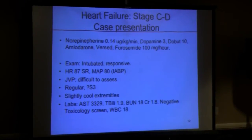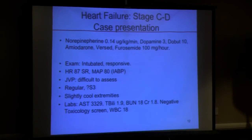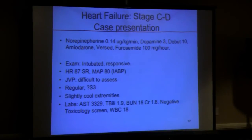On arrival, he was on levo, dopamine, dobutamine, amiodarone, Versed, and Lasix — intubated but responsive. His MAPs with balloon pump were about 80, heart rate 87. JVP was difficult to assess given ventilation; he had slightly cool extremities, and labs showed evidence of shock liver with slightly elevated T-bili, creatinine 1.8 falsely low due to dialysis, negative toxin screen, and white count of 18.